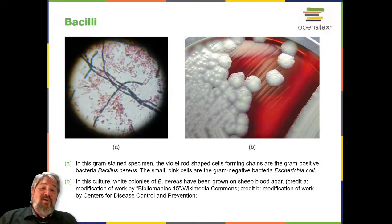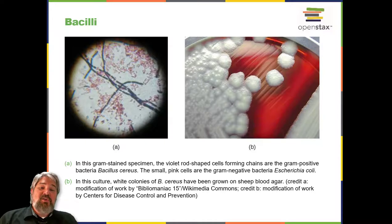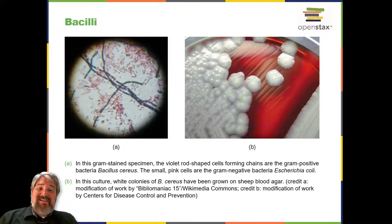One other important species is Bacillus thuringiensis. This bacterium produces a number of substances used as insecticides because they are toxic for insects, with the Bt toxin — also called the Cry toxin — being the most prominent.